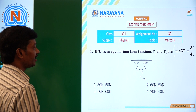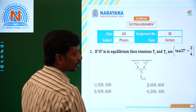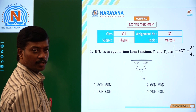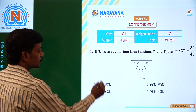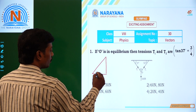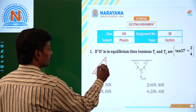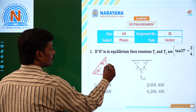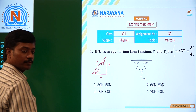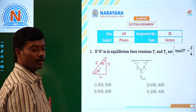First question is: if O is in equilibrium, then tensions T1 and T2 are. For that, it is given that tan 37° is equal to 3/4. So if we see the right angle triangle with 37 degrees and 53 degrees, this side is 3, this is 4, and the hypotenuse is 5. So we can take the help of this triangle.